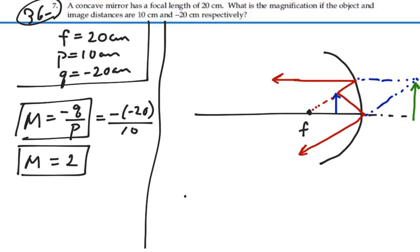So the image is actually behind the mirror. It is upright as we expected because we have magnification that's positive, and the image is twice the size of the object. Here's our object and here's our image.